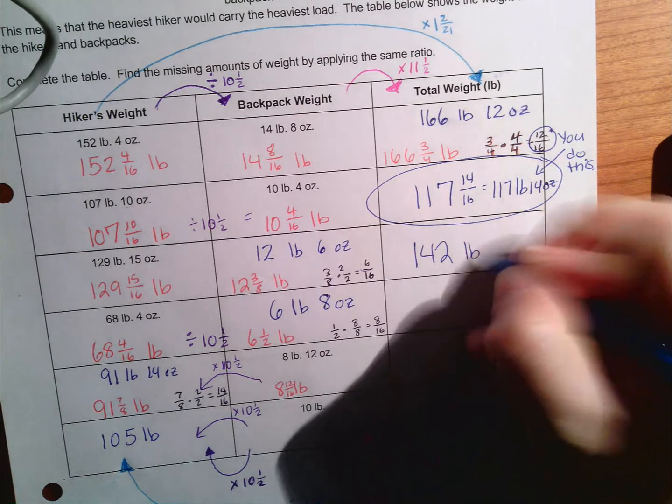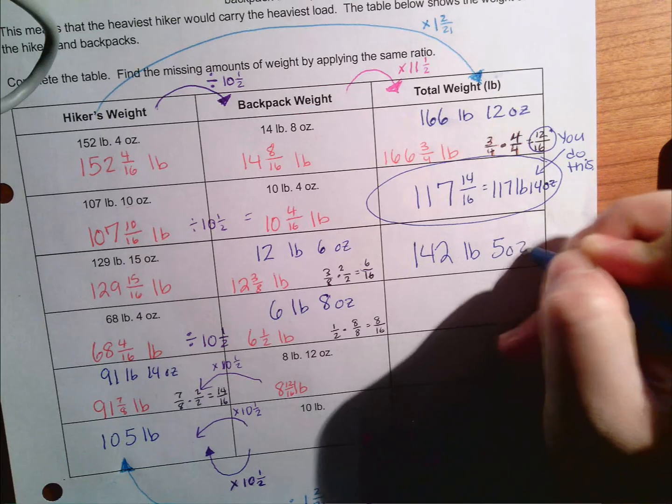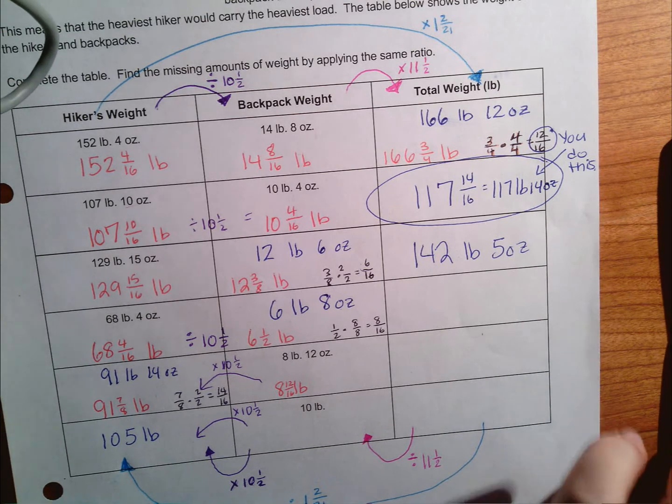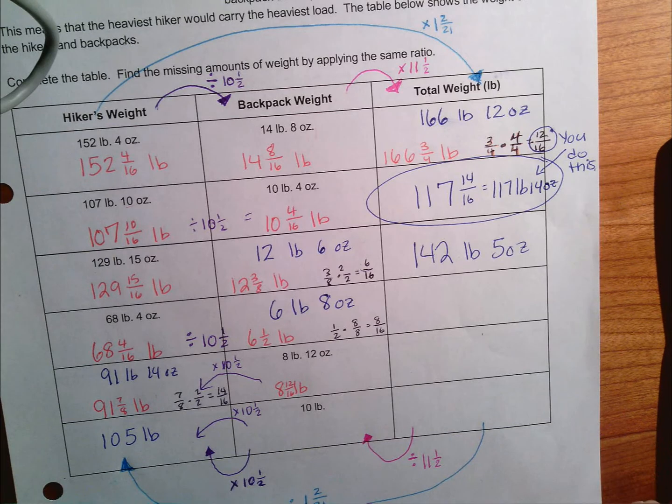The next one says 68 pounds four ounces, so 68 pounds and four sixteenths of another pound. I'm adding that to six pounds and eight ounces.